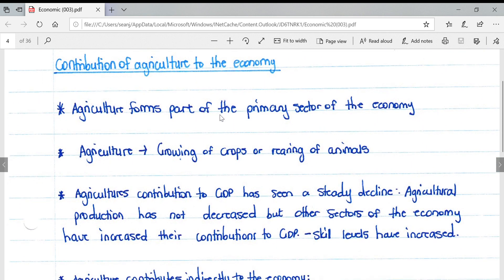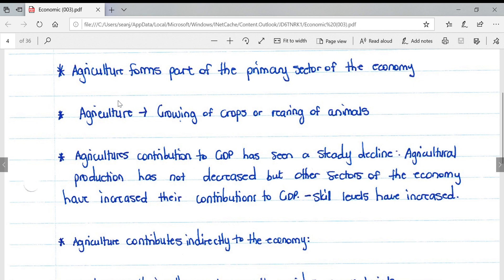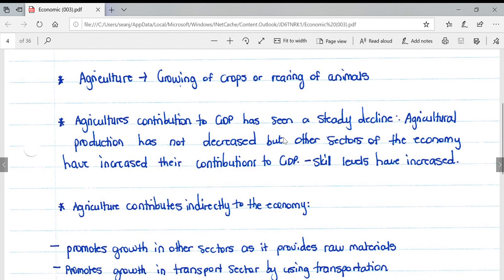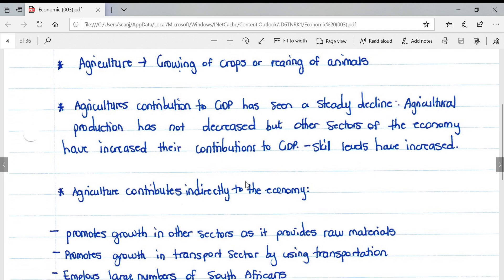Looking specifically at agriculture's contribution to the economy, agriculture forms part of the primary sector and deals with growing of crops or rearing of animals. Agriculture's contribution to GDP has seen a steady decline. Agricultural production has not decreased, but other sectors of the economy have increased their contribution to the GDP.